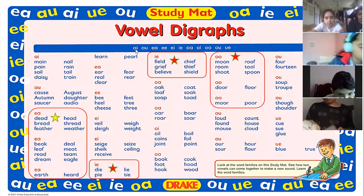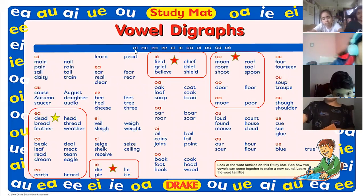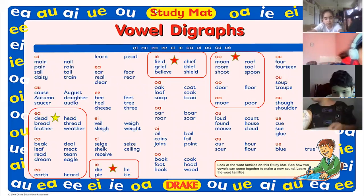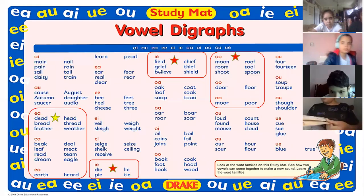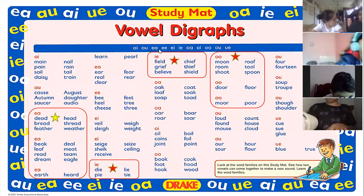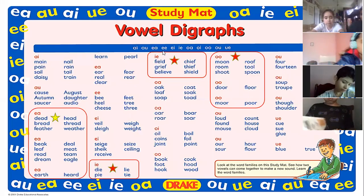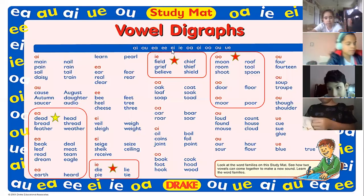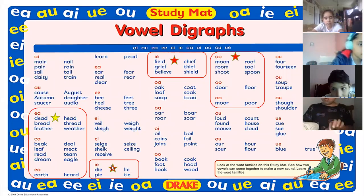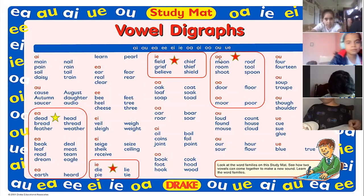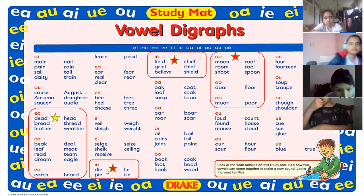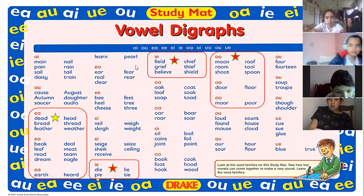A-I, A-U, E-A, E-E, I-E, O-A, O-I, O-O, O-U, U-E.